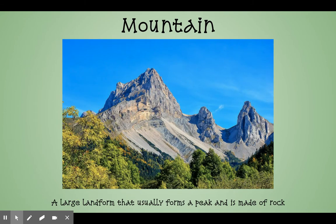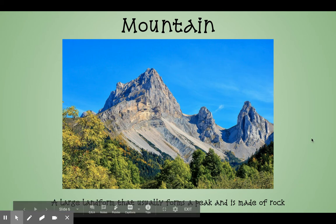Mountain. A mountain is a large landform that usually forms a peak and is made of rock. So this is a mountain — notice how it goes all the way up. A lot of times a mountain has a peak, which means it comes to a point at the top. This is a mountain and it's also made out of rock.